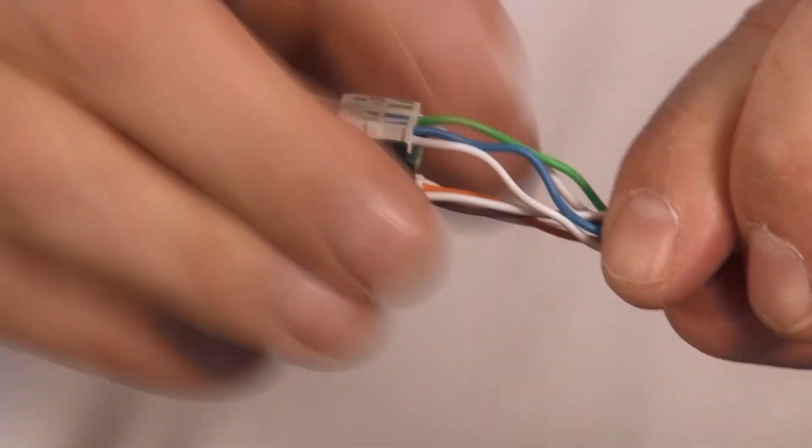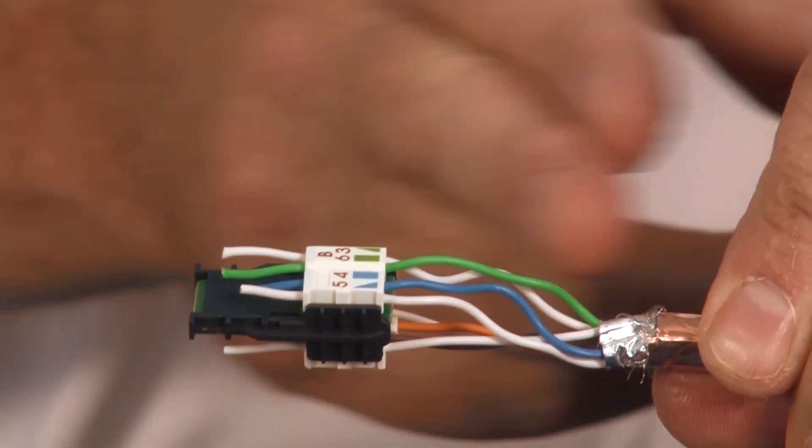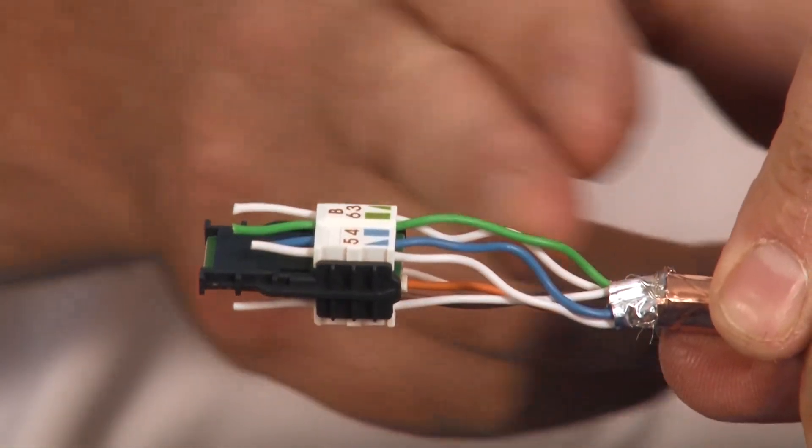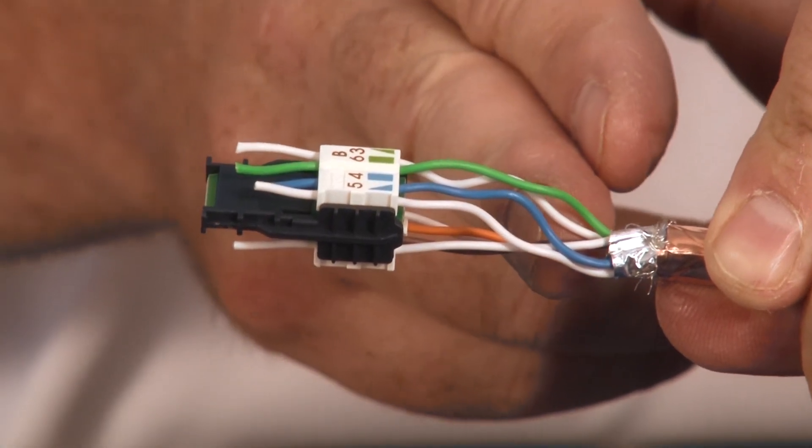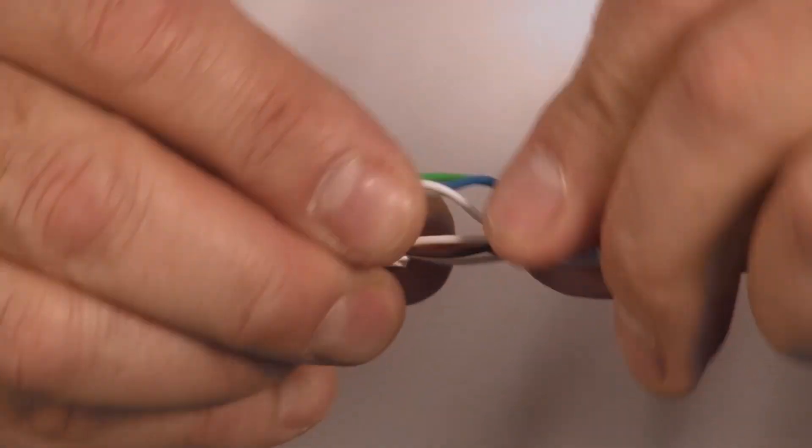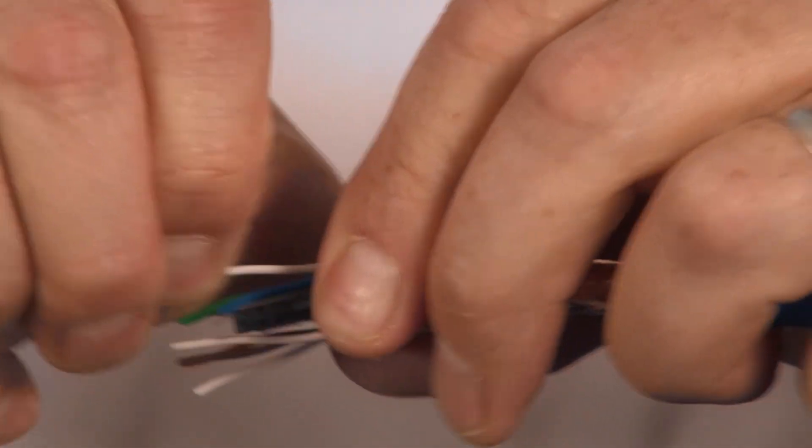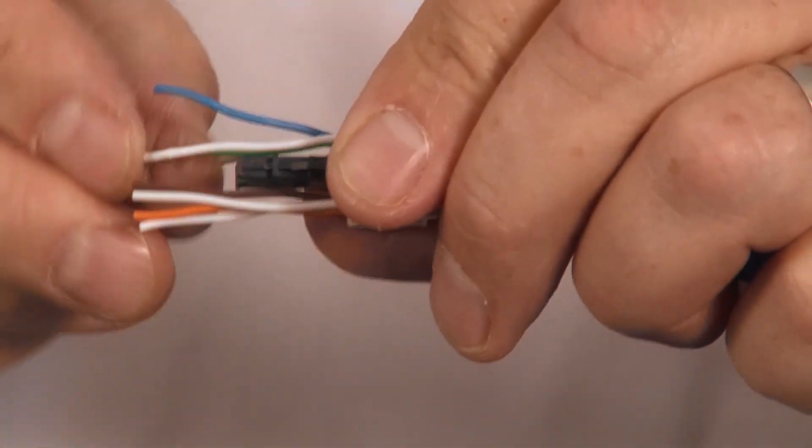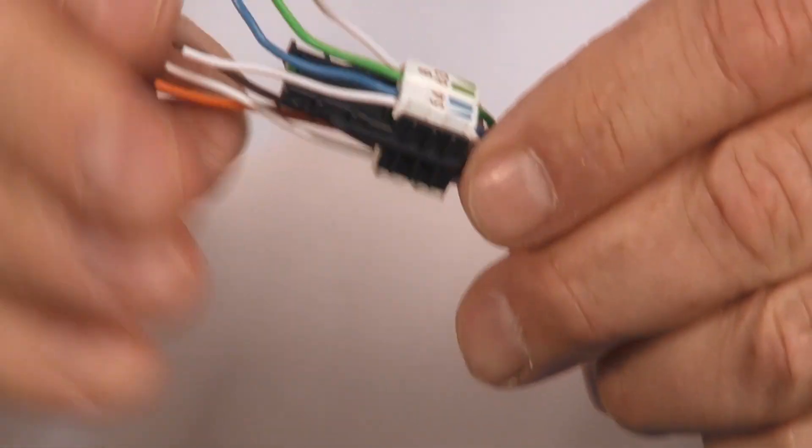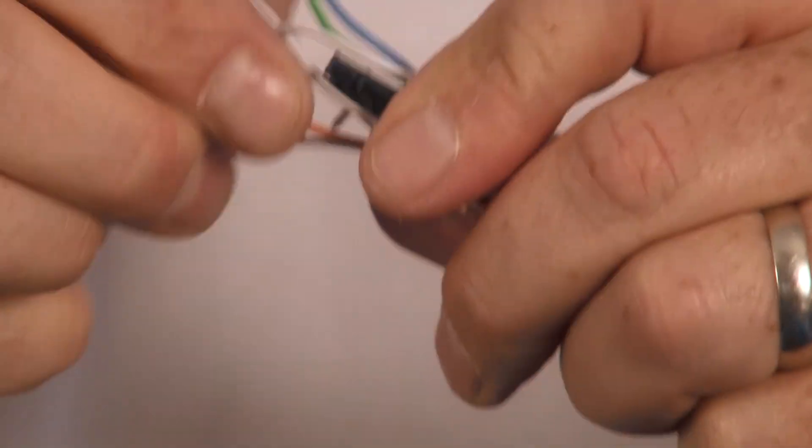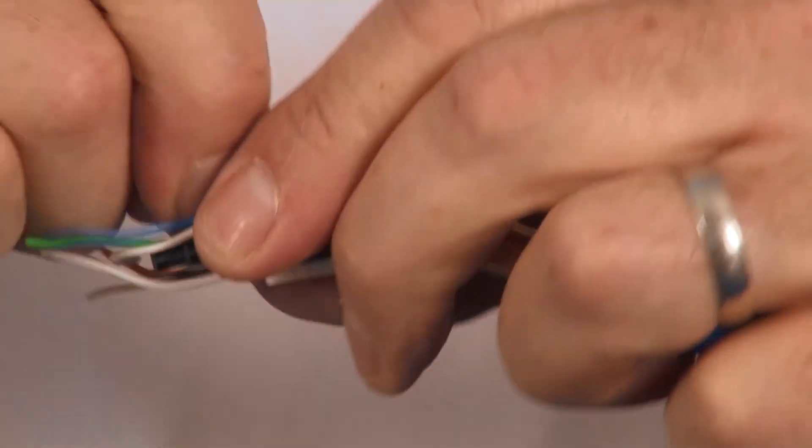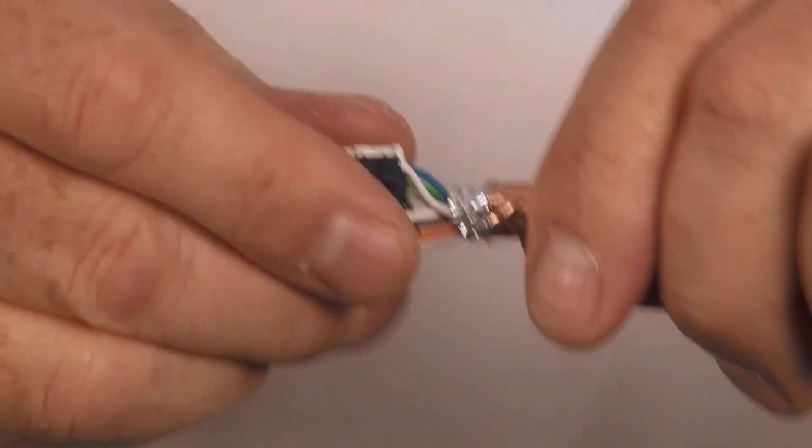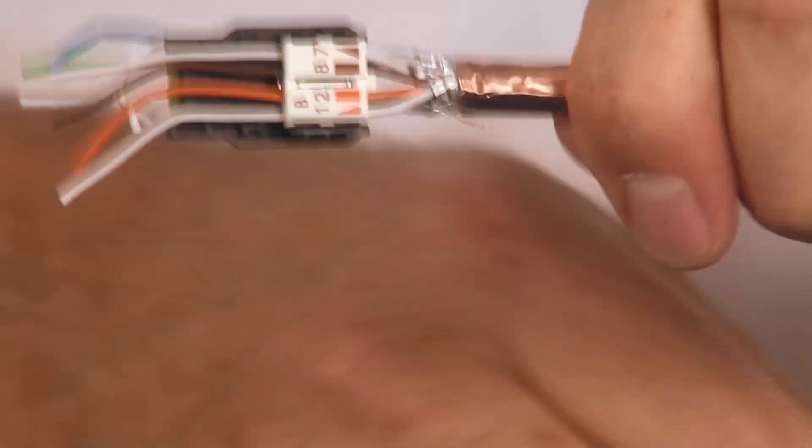Once I get them all inserted, now I want to slide them up the cable as far as I can. You want to follow the TIA instructions as far as untwisted pairs. You only want to have about less than a half of an inch or less is better. You go ahead and seat this down. Sometimes you have to help the conductors. Give it a little pull. These are very large conductors with the insulation they have on them. Just get them down as close as possible.